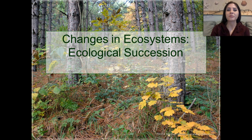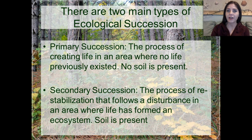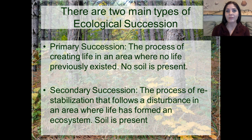Changes in ecosystems is called ecological succession. There are two main types of ecological succession: primary and secondary. If you remember nothing else between the two, remember that primary succession does not have soil in the beginning, and that secondary succession does.